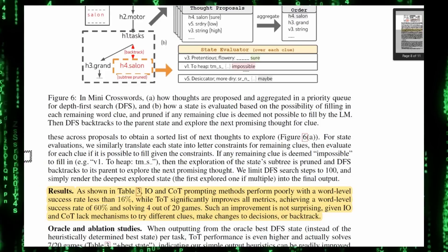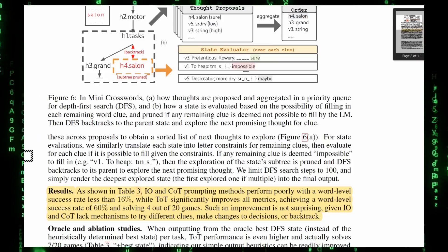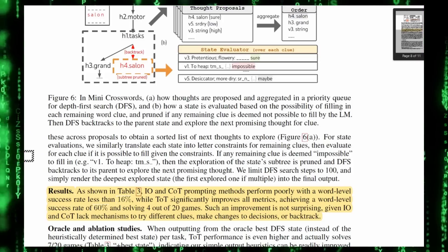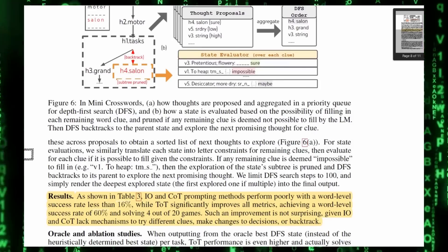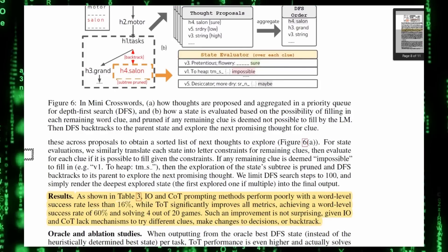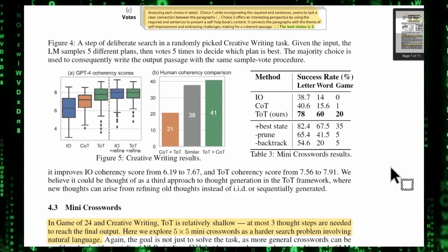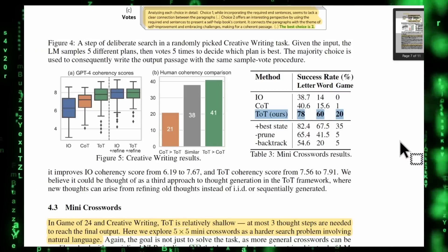So results, as shown in Table 3, IO and COT prompting method, input-output and chain of thought prompting methods perform poorly with a word level success rate less than 16%, while tree of thought significantly improves all metrics, achieving a word level success rate of 60% and solving four out of 20 games. And here's that Table 3, as you can see here. TOT, again, absolutely crushes everything else.